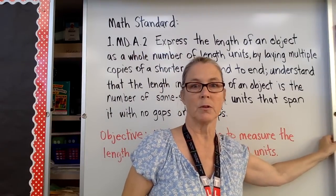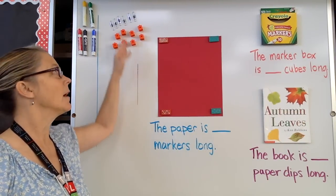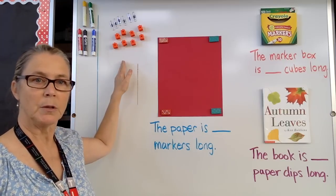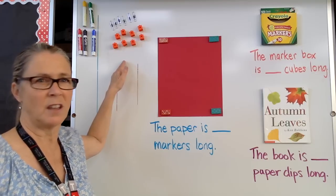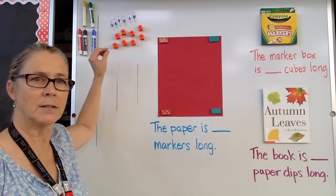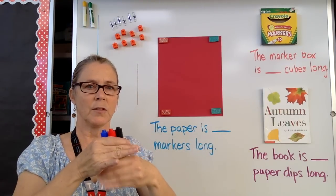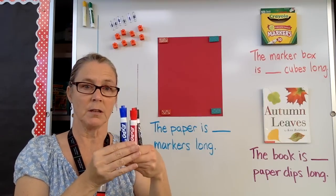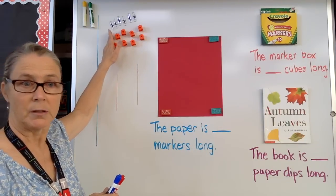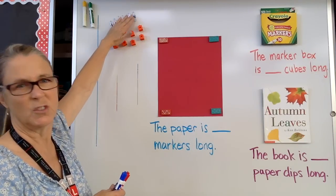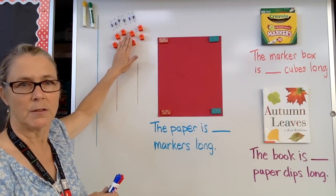The non-standard units we're going to use today are markers, cubes, and paper clips. What's really important about using non-standard units is that they're all the same length. We can't measure with just any markers or any cubes — they all have to be the same length. For example, these markers are exactly the same length, so it would be accurate to measure with these. Same with our cubes and our paper clips. We couldn't use small paper clips and large paper clips; we would have to use all the same size.